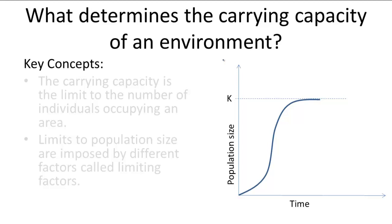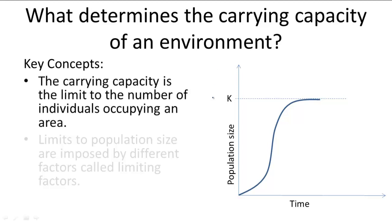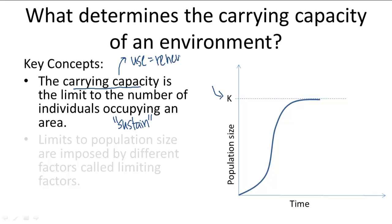As we have learned, every environment has a maximum number of individuals it can sustain, called the carrying capacity. It's important to understand the use of the word sustain, because populations can grow over the carrying capacity, but the environment will not be able to support these large numbers over time, because resources will be used up faster than they can be renewed. So another way to think of carrying capacity is the point at which the rate of resource use is equal to resource renewal.